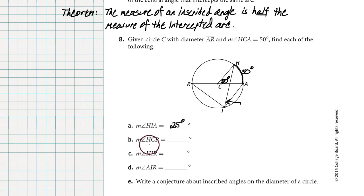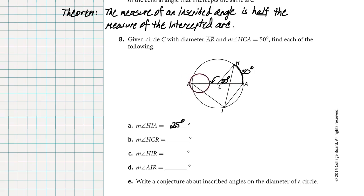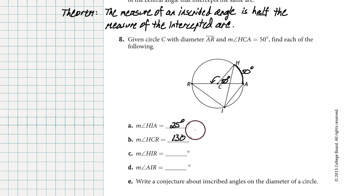Question B: what's the measure of angle HCR? Angle HCR is this obtuse angle located along the diameter. Angles HCA and HCR are supplementary — they add to 180 degrees. So angle HCR is 130 degrees.